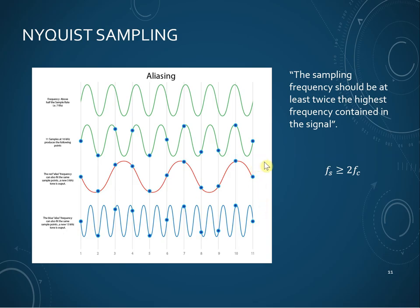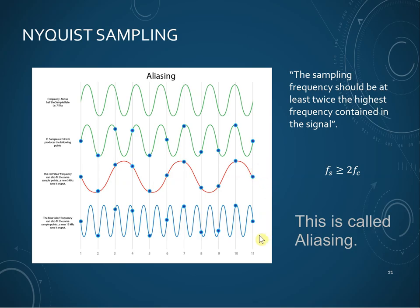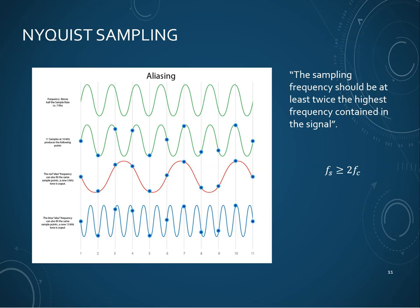We could even have another signal at 13 kHz that fits the same sampled points — that's not ideal either. This stems from the fact that the sampling frequency used was not fast enough, resulting in signals that look entirely different. The Nyquist criterion states that the sampling frequency fs must be greater than or equal to 2fc, where fc is the highest frequency we expect from our signal.